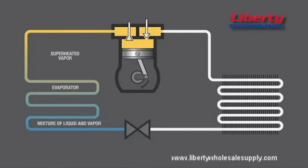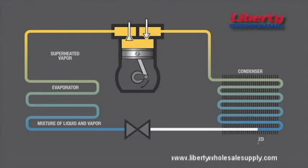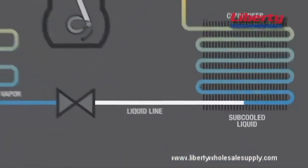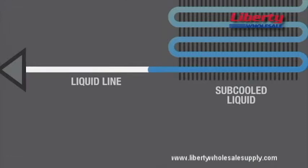Now let's look at subcooling. As refrigerant enters the system's condenser, it's in a vapor state. As heat is removed from the vapor, it will turn to liquid at its saturation condensing temperature. After the vapor has turned to liquid, any temperature of the liquid below this saturation condensing temperature is called subcooling. Because the efficiency of the system is optimized with subcooling, you want to make sure that you have a constant supply of liquid to the evaporator. It's important that the refrigerant is subcooled to prevent it from turning to gas before it gets there. A smaller amount of refrigerant is required to maintain the desired temperature, which means less work for the compressor.